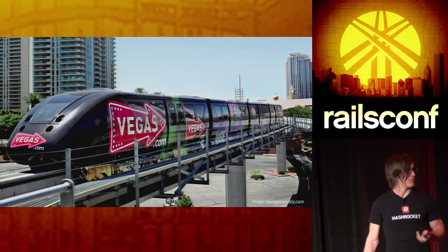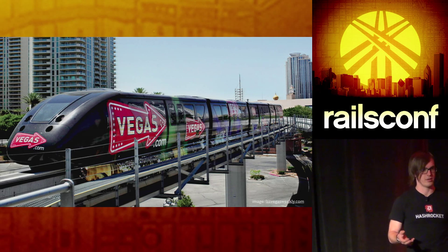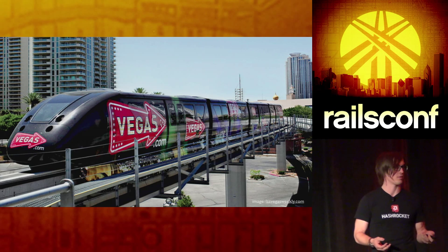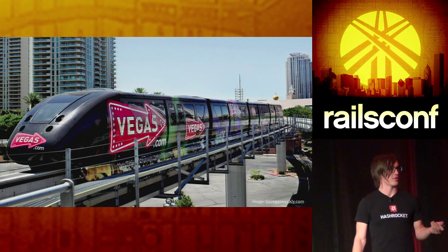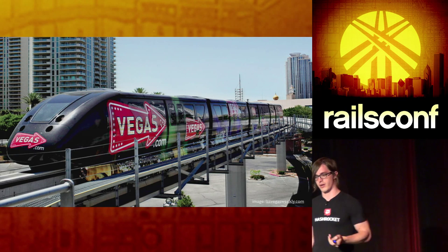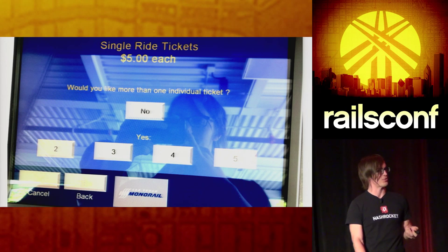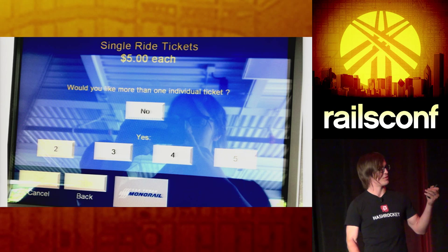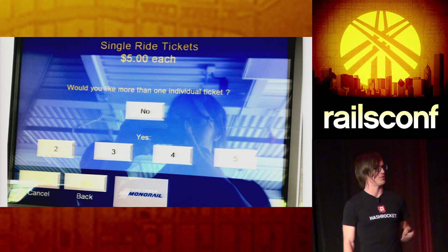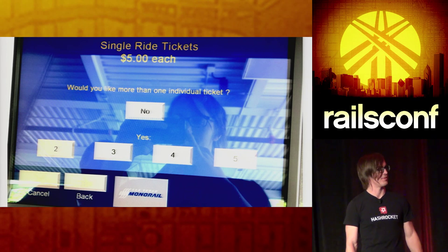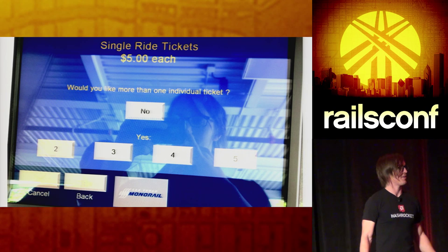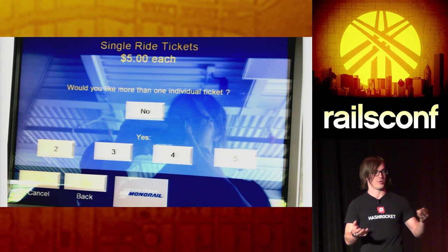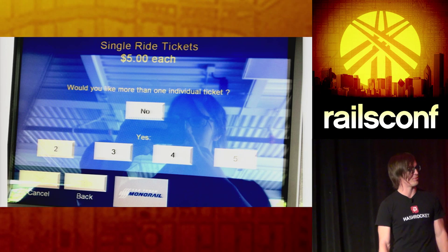In contrast to that, I took a monorail later — because after two or three days spending like $50 a day on cabs, it turns out there's a monorail that's way less money. We walk up to the monorail display and this is what we see. Single ride tickets, $5 each. First question: 'Would you like more than one individual ticket?' No. Or yes — two, three, four, five. All this has to be is just buttons of one, two, three, four, five. And it was this completely baffling thing that we were just floored by.